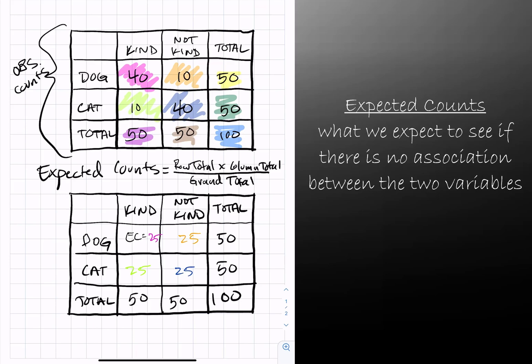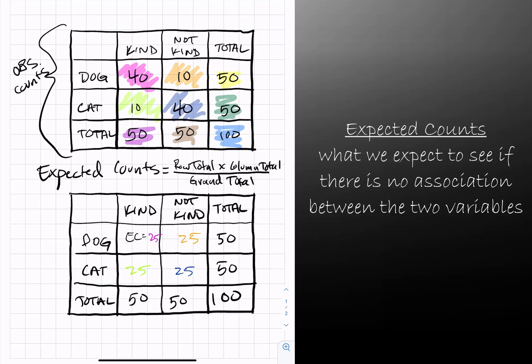One thing that's important to note is that an observed count has to be a whole number because it's what we observed from the data. However, the expected counts don't always have to be whole numbers because it's a calculation as opposed to counting the number of individuals that are in a specific group.